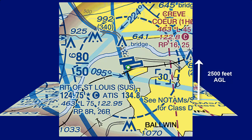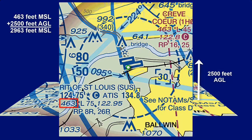If you look at the chart, you can see that the elevation for the Spirit of St. Louis Airport, KSUS, is 463 feet. If you add 2,500 feet to that, you will get 2,963 feet MSL. Notice that the chart has 30 in brackets, which means the top of the airspace is 3,000 feet MSL, as 2,963 feet MSL is rounded up to the nearest hundreds of feet above sea level.